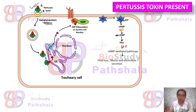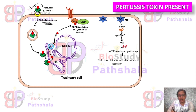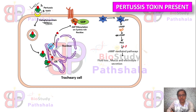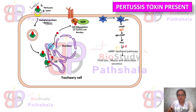After binding with the receptor, the toxin is endocytosed and follows the retrograde pathway, that means the reverse pathway. This endocytosed toxin goes to the ER and binds to the ER membrane. The A subunit then cleaves to form the A1 subunit, which enters the ER lumen and is exported to bind to the Gi alpha subunit.